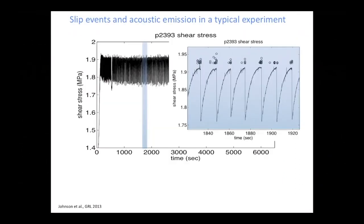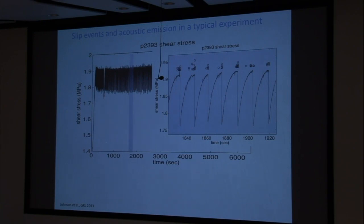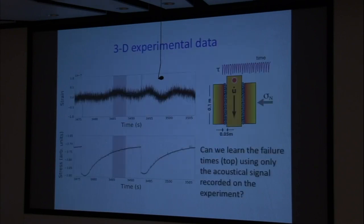These are the kinds of data that come out of this system — shear stress as a function of experimental run time. Each one of those vertical lines is a slip event in the laboratory, a stress drop corresponding also to a friction drop. Zooming in, you see the same thing, and those open circles on top show where identified precursors are located as you approach failure. These are impulsive precursors approaching failure — something we were analyzing three or four years ago before we looked at continuous data.